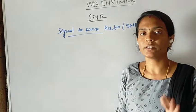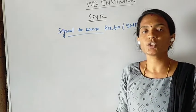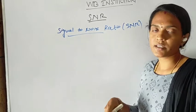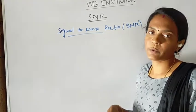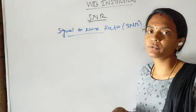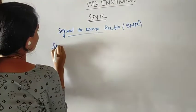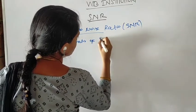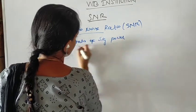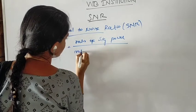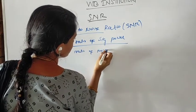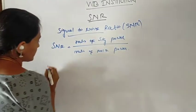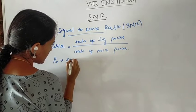Next topic is SNR — Signal to Noise Ratio. SNR is defined as the ratio of signal power to noise power. SNR is equal to the ratio of signal power to noise power, where PS is represented as signal power.